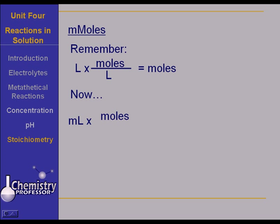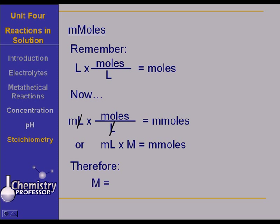So, milliliters times moles per liter, liters cancel with liters, leaves you with millimoles. Or, if you will, milliliters times moles per liter is millimoles. It's very simple, folks. You just take the milliliters, multiply it by the concentration, and you've got the number of millimoles you're dealing with. Therefore, molarity is equal to millimoles over milliliters.